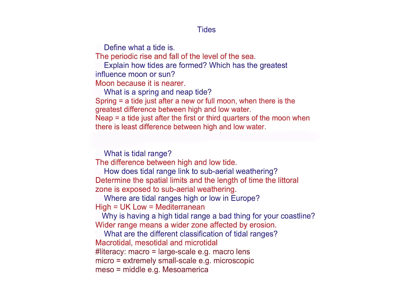A tide is a periodic rise and fall in the level of the sea. There are two different types: spring tide, which is a tide just after new or full moon, and neap tide, just after the first or third quarters of the moon. Tidal range is the difference between high and low tide. Just check you're familiar with this terminology — macro meaning large scale, micro meaning extremely small scale.